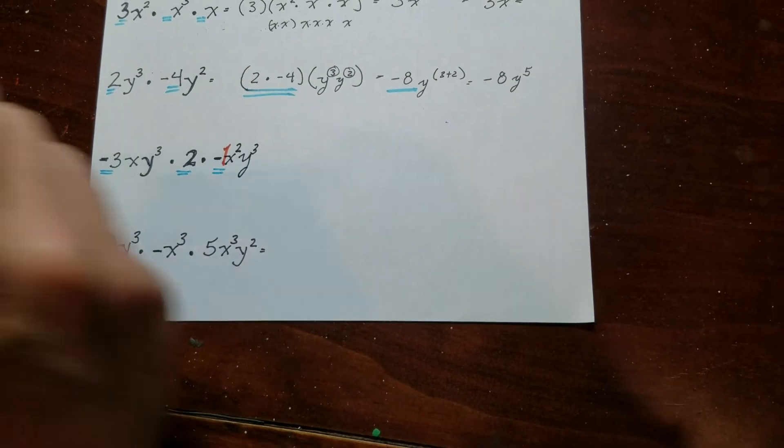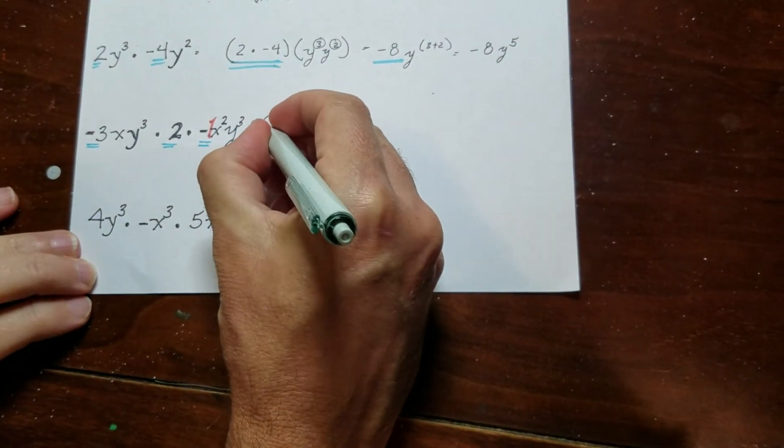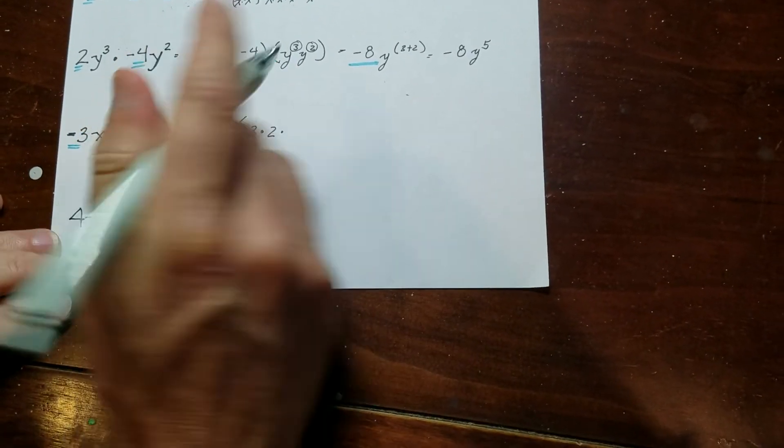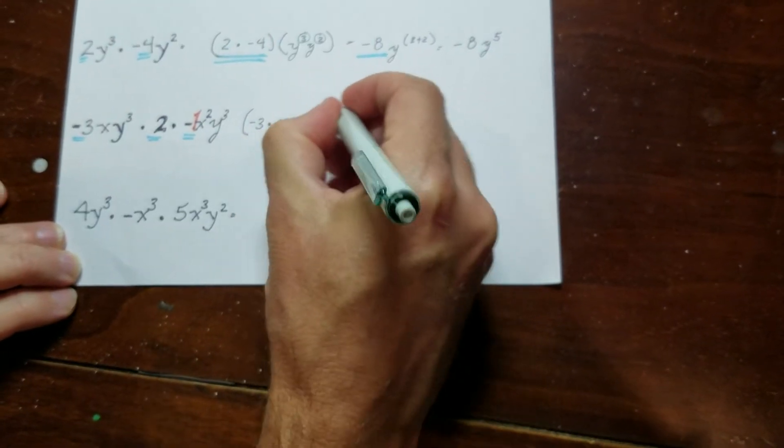See? So what I'm going to do is I'm going to put my coefficients in a group. So I have negative 3. I have this 2. And then I have a negative 1. Okay?